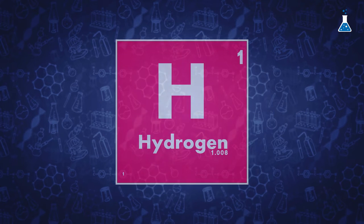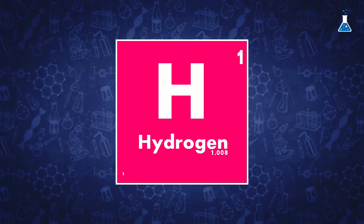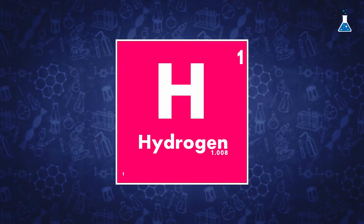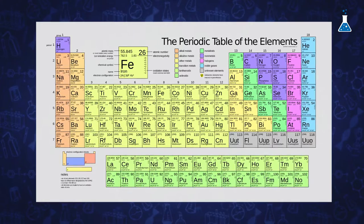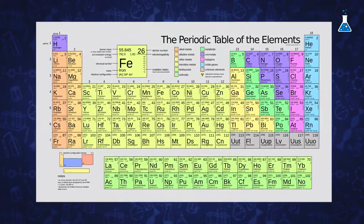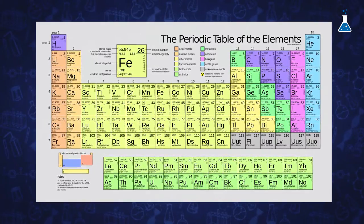Elements are the building blocks of matter. Behind the symbol through which they are represented, there is a wealth of important physical and chemical properties that we can exploit for our convenience to make our life better and contribute to the advance of human society. During this course we will explore a great part of the periodic table, comprising metals and metalloid elements which are truly present in our lives.